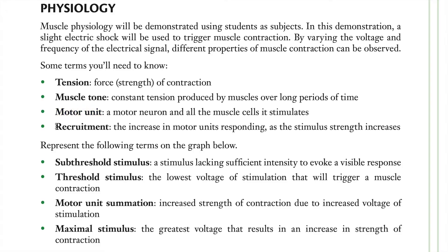The term recruitment refers to when we need to develop more tension or produce a stronger force — for instance, when we're lifting something heavy. In order to get more of your muscle to respond, we have to increase the number of motor units that are actually contracting. There are a couple of different ways that happens, and we'll look at those in more detail with these graphs.